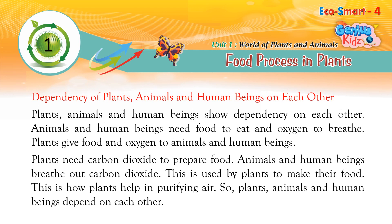Plants, animals and human beings show dependency on each other. Animals and human beings need food to eat and oxygen to breathe, which plants provide. Plants need carbon dioxide to prepare food, and animals and human beings breathe out carbon dioxide, which is used by plants. This is how plants help in purifying air. So plants, animals and human beings depend on each other.